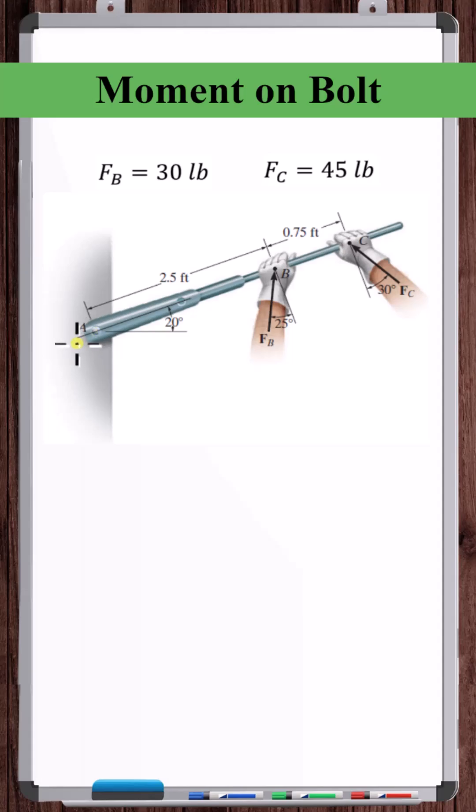Therefore, the direction of all moments is going to be into or out of the plane, which in this case means into or out of the page. Therefore, in this case, we can calculate moments using a scalar analysis instead of R cross F.